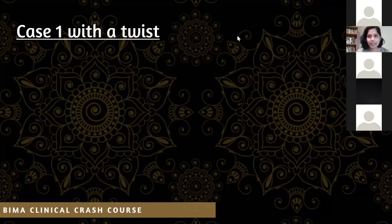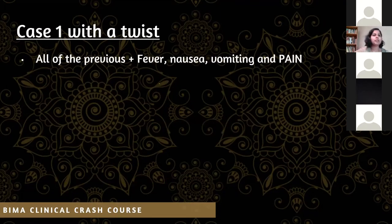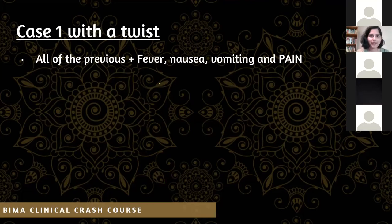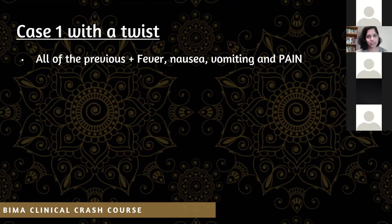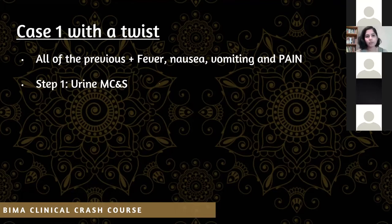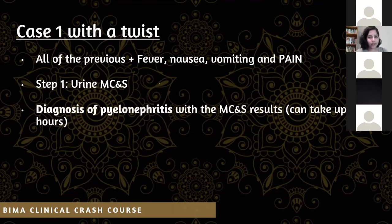Now a twist: the same 40-year-old patient presents with all previous symptoms plus fever, nausea, vomiting, and pain. This is pyelonephritis. Duration of treatment depends on trust guidelines — some go for three days, some five, some seven. The first step is again to take an MCS and send it off to the lab. You typically diagnose pyelonephritis with MCS results — this can take up to 48 hours. Start antibiotics immediately, then tweak based on sensitivity results when they return.